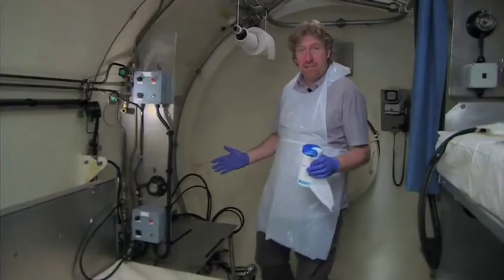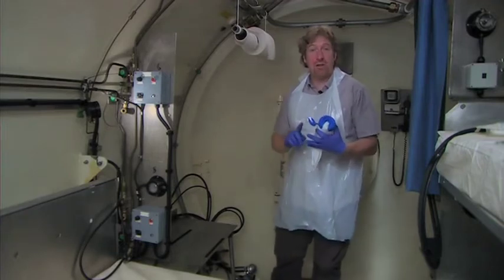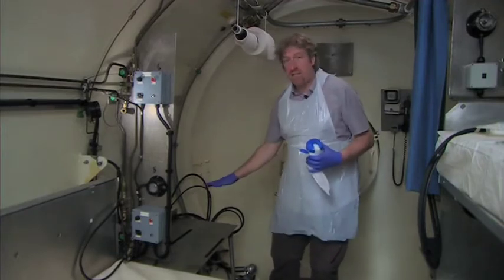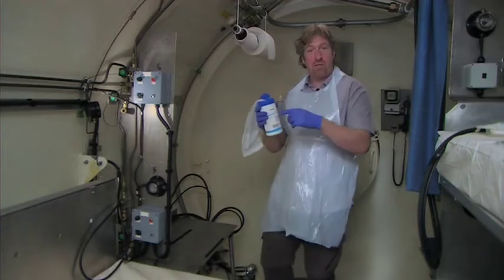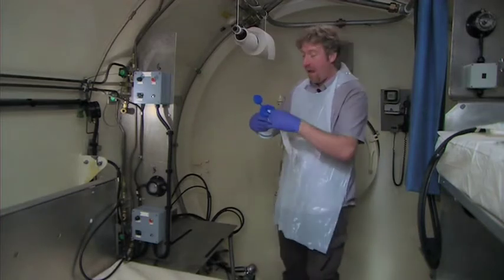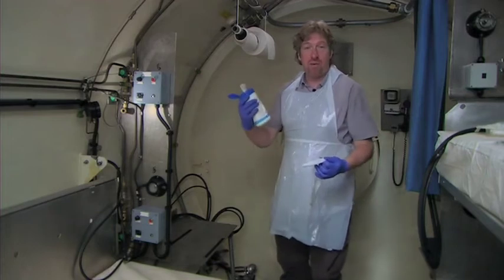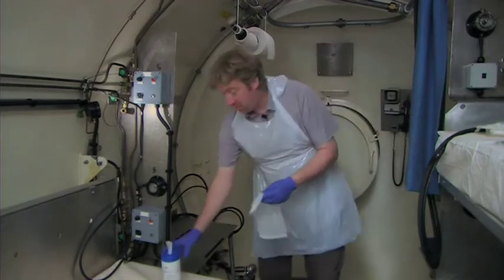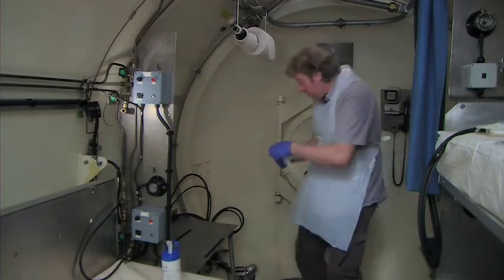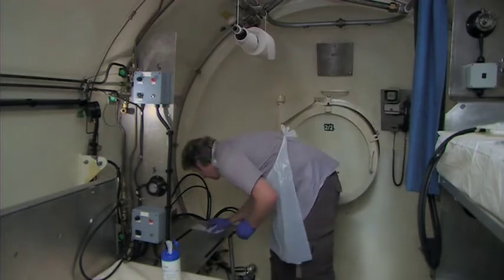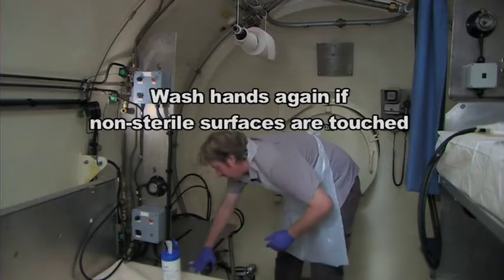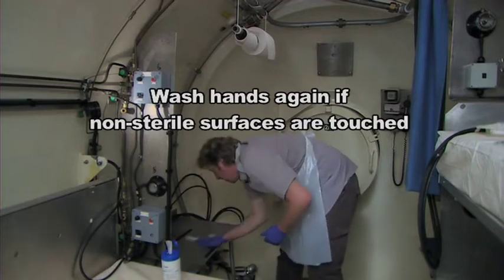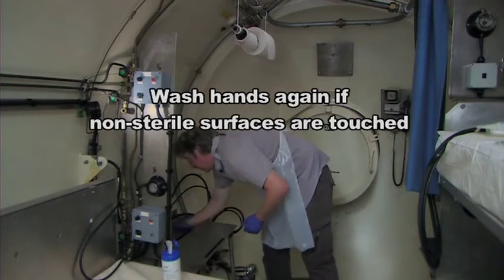First thing we need to do when we're doing any sterile or clean procedure is clean the surface that we're going to put the sterile equipment on. Here I'm using disinfectant wipes, you could also use alcohol wipes, and in the absence of both, soap and water does the job just as well. Make sure you give the surface a good clean with clothed hands to ensure you've got the whole surface that the packs are going to be in contact with.